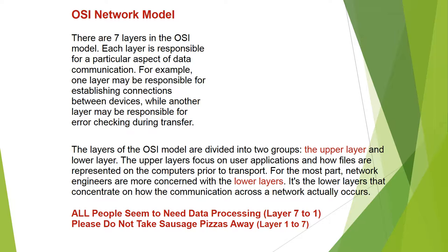Reading from layer 7 to 1: All = Application layer, People = Presentation layer, Seem = Session layer, Need = Network layer, Data = Data Link layer, Processing = Physical layer.